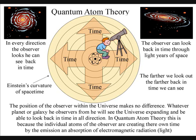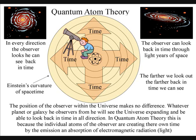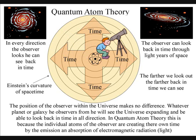The position of the observer within the universe makes no difference. Whatever planet or galaxy he observes from, he will see the universe expanding, and be able to look back in time, in all directions. The observer is at the centre of his own reference frame, because he is creating his own space-time geometry, relative to his position and momentum.